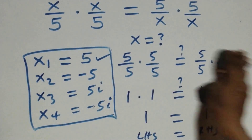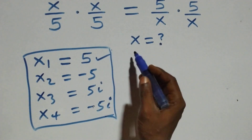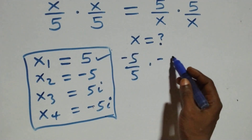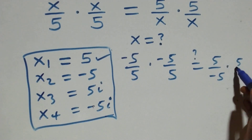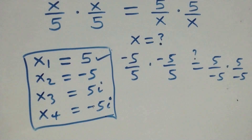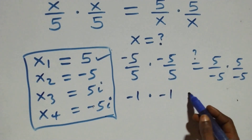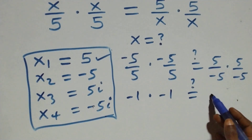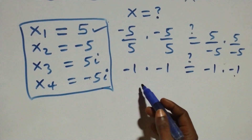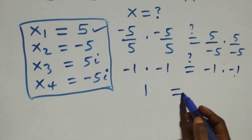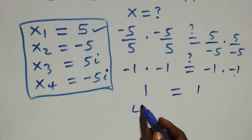Substituting x equals minus 5: minus 5 over 5 times minus 5 over 5 equals 5 over minus 5 times 5 over minus 5. This gives minus 1 times minus 1 equals minus 1 times minus 1, so 1 equals 1. The left hand side equals the right hand side.